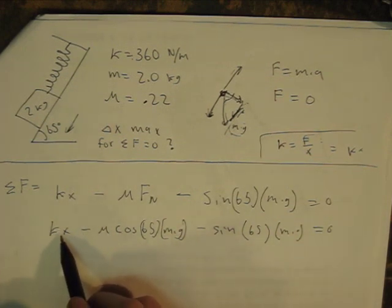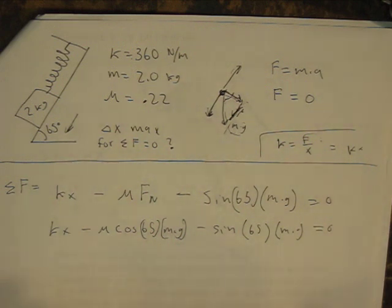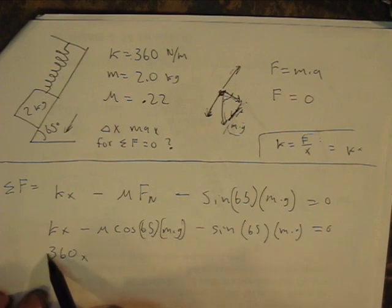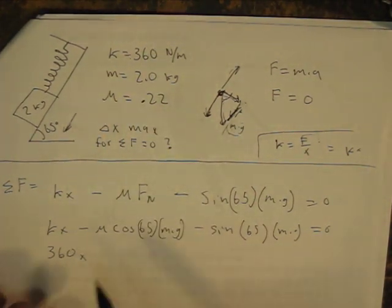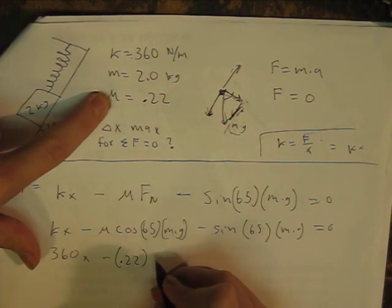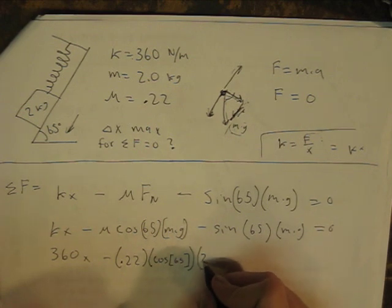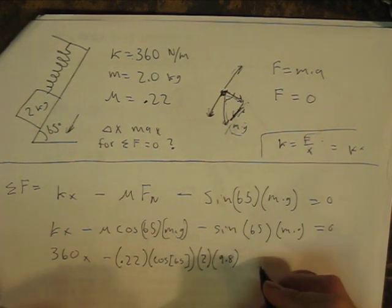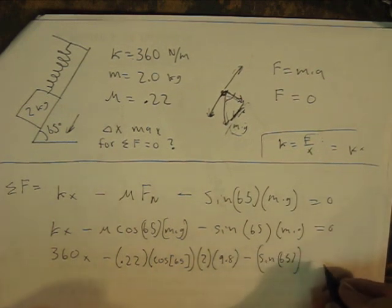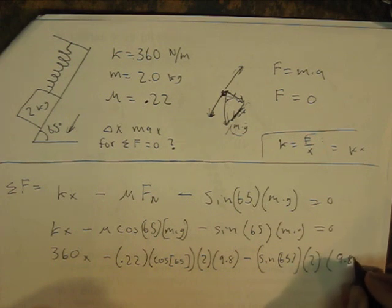So kx is just, we're solving for x. Remember, we want to find the displacement. What is the max we can pull on this spring and have the box stay in the same spot. So kx is just going to be 360x. And that's just we have k right here and we don't have x. So kx, 360x, minus 0.22, that's our coefficient of friction right there, times cosine of 65 times mass, which is 2, times gravity, which is 9.8. And then minus sine of 65, sine of 65, I'll put that in parentheses, mass times gravity, so 2 times 9.8 equals zero.